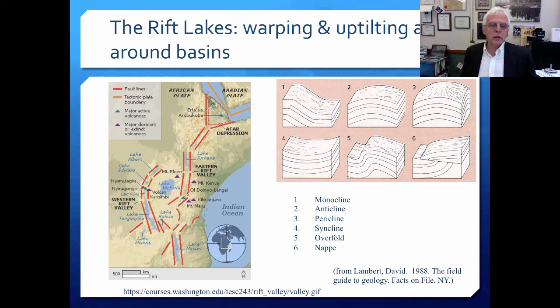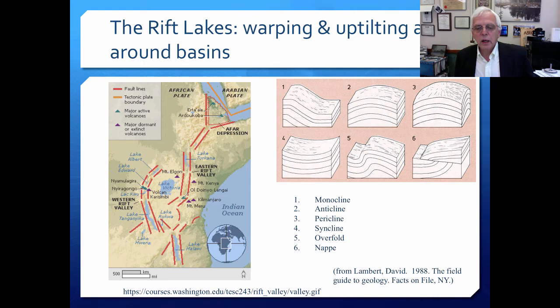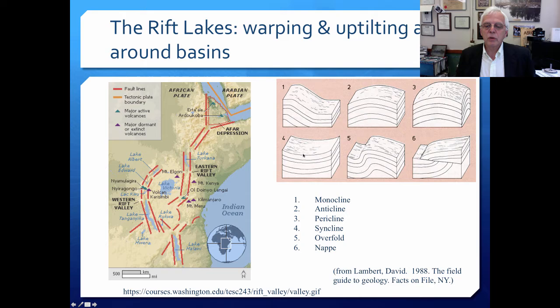Other tectonic basins include rift lakes — very famous lakes in the east part of Africa: Lake Victoria, Lake Albert, Edward, Kivu, Tanganyika, and Malawi. These were formed by fault lines and slipping of the Earth's surface downward. Warping and uplifting around these basins can also cause lake formation through various processes including paraclines, monoclines, and overfolds — all forming areas where lakes can accumulate.